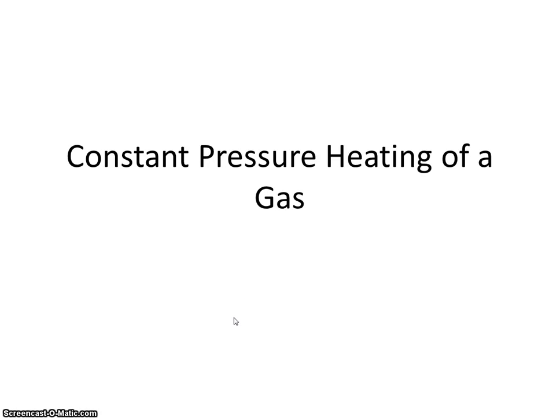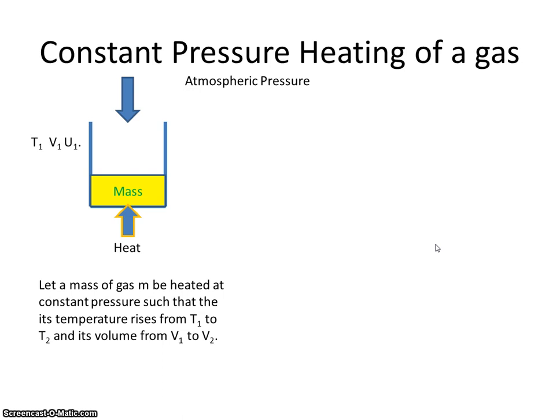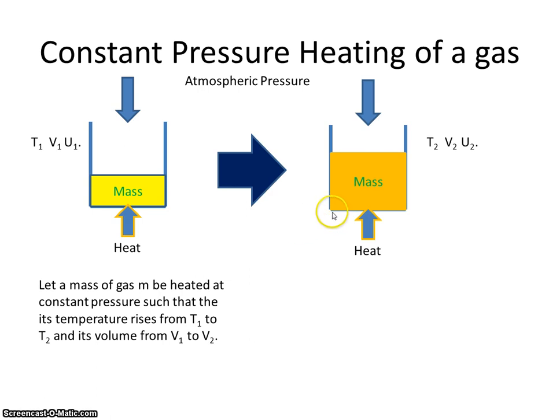Right, here we're going to look at what happens when we heat a gas at constant pressure. So let's assume we have a mass of gas at a temperature of T1, V1 and U1. And we're going to heat that so that the new temperature becomes T2, its new volume is V2 and its new internal energy is U2. And we're going to do all this under atmospheric pressure. So the pressure is constant in both cases, constant at atmospheric.